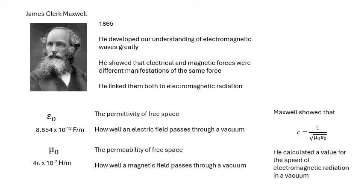James Clerk Maxwell showed that you could use both of those to work out a value for the speed of electromagnetic radiation. You've got the numbers there - do it for yourself. You might be asked to do it in an exam, and hopefully you'll get something like three times ten to the eight meters per second.